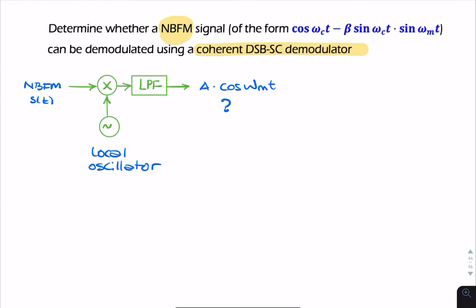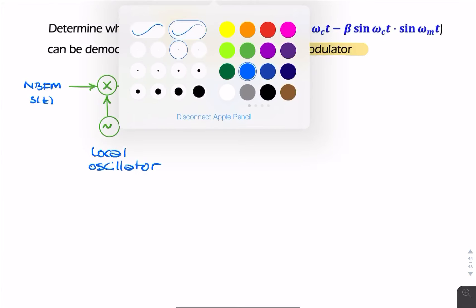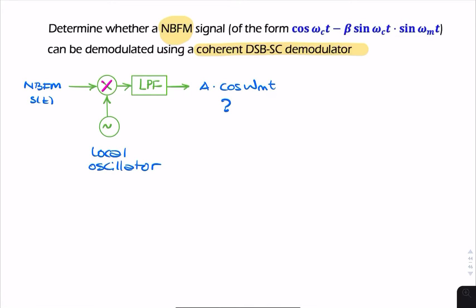So to do that, we'd look at it step by step. The first thing we'd look at is this multiplication, and we'd see what's happening right after the multiplier. So what's happening at this point here? Let's call that x(t). So let's find x(t) and see, is that any closer to what we're looking for.